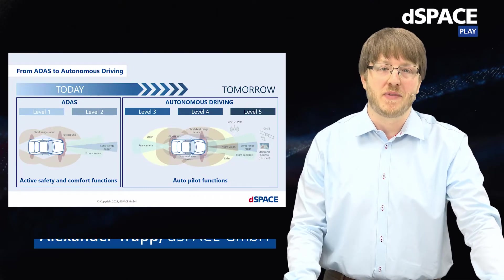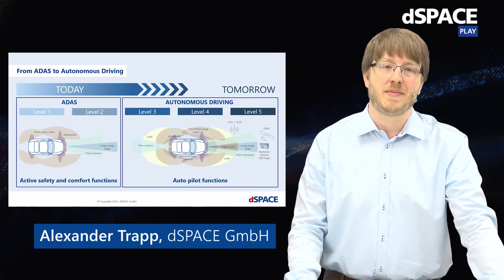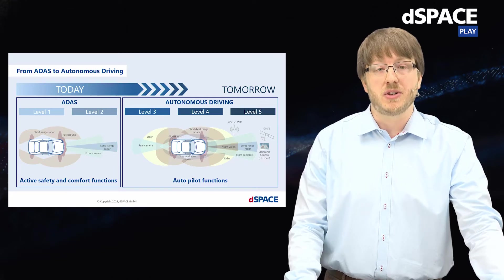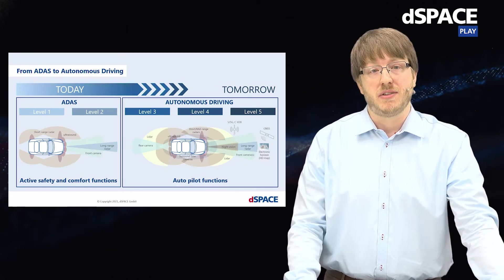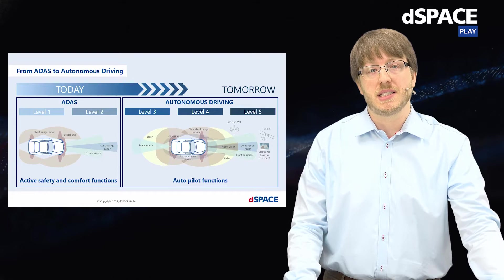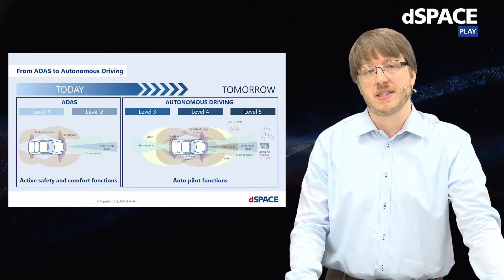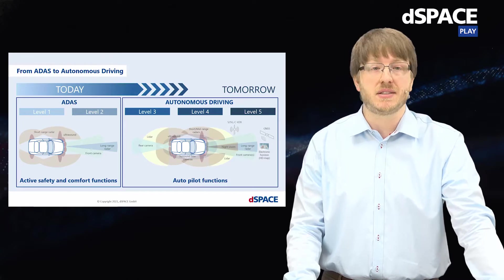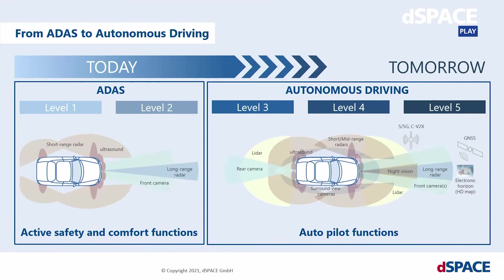Hello and welcome to the Novation Coffee Break. Developing driver assistance systems and autonomous driving functions requires more sensors and more sophisticated sensors to give the functions an accurate image of the vehicle's surroundings. One important sensor type is the radar sensor, which can be used for long, medium, and short range applications. And the requirements on these sensors are steadily increasing.